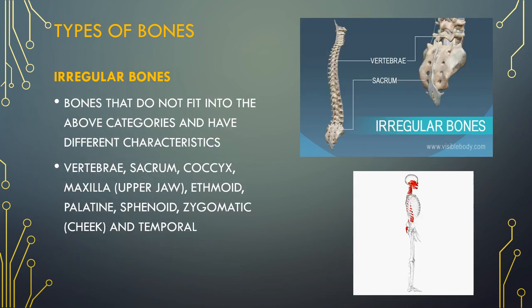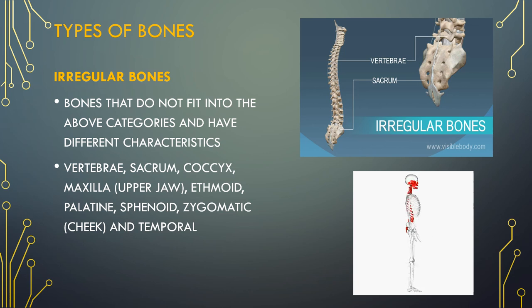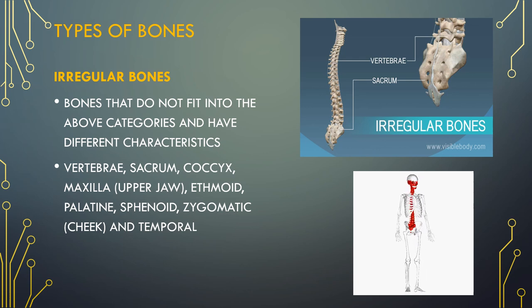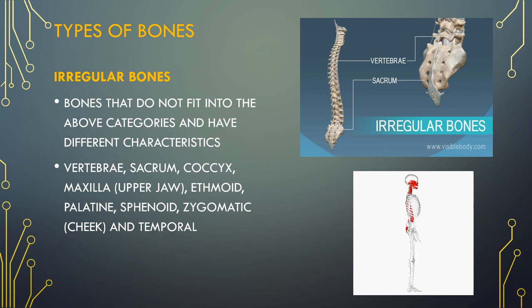Irregular bones vary in shape and structure and therefore do not fit into any other category like flat, short, long or sesamoid. They often have a fairly complex shape which helps protect internal organs. For example, the vertebrae, which are irregular bones of the vertebral column, protect the spinal cord. The irregular bones of the pelvis protect the organs in the pelvic cavity.